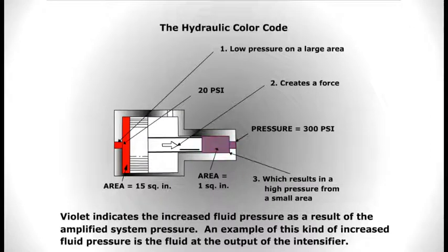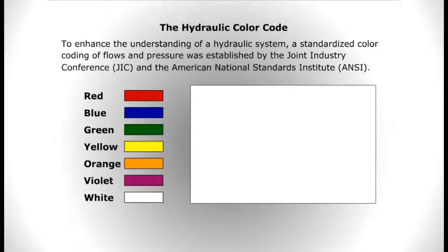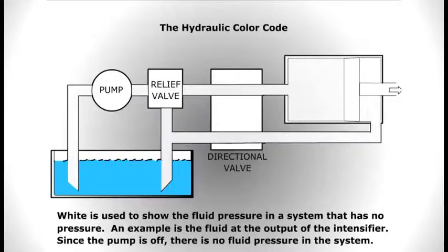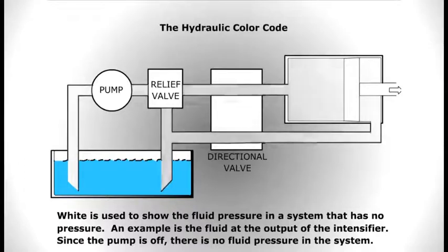White is used to show the fluid pressure in a system that has no pressure. An example is the fluid at the output of the intensifier. Since the pump is off, there is no fluid pressure in the system.